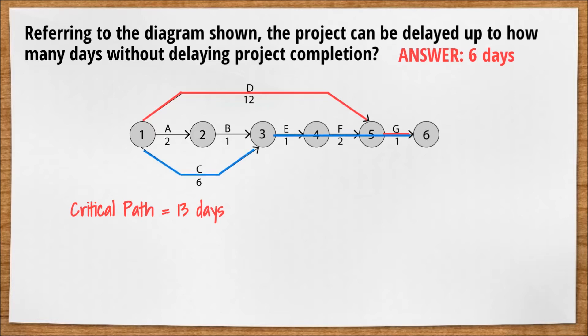Path 1, 3, 4, 5, 6 would take 10 days, giving it a float value of 3, since 13 critical path days minus 10 float path days is equal to a float value of 3.